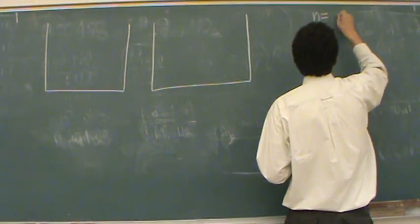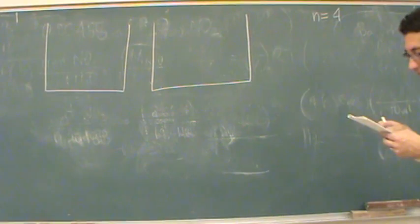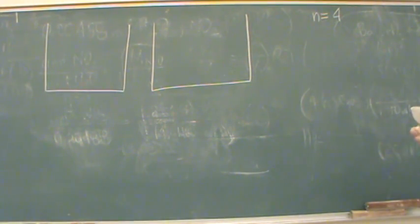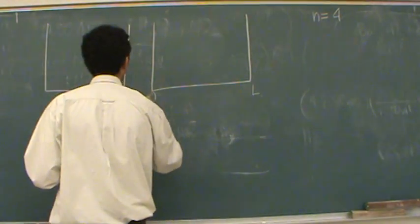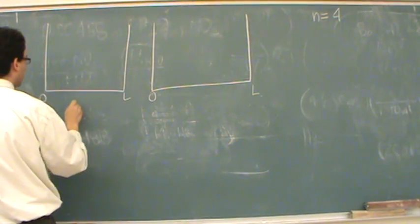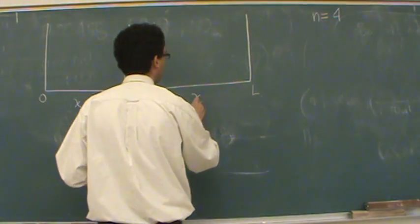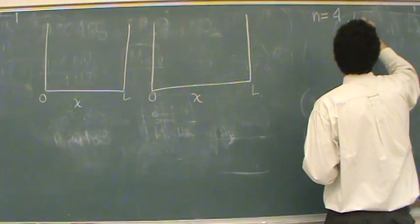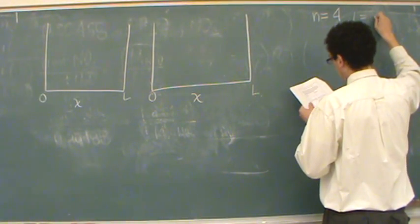So, n equals 4. And there's two boxes here, going from 0 to L, where L, the length of the box, is 4 nanometers.